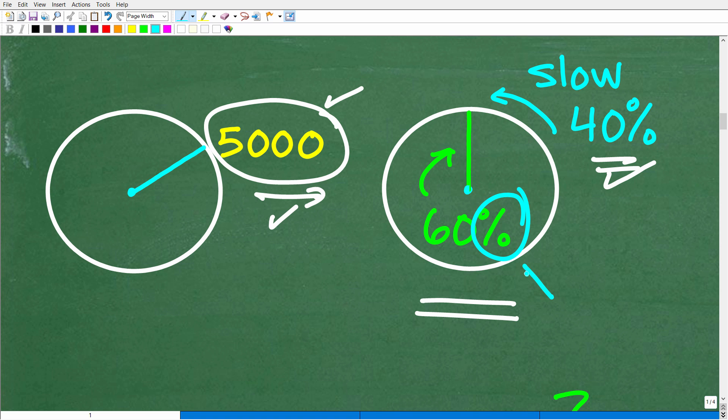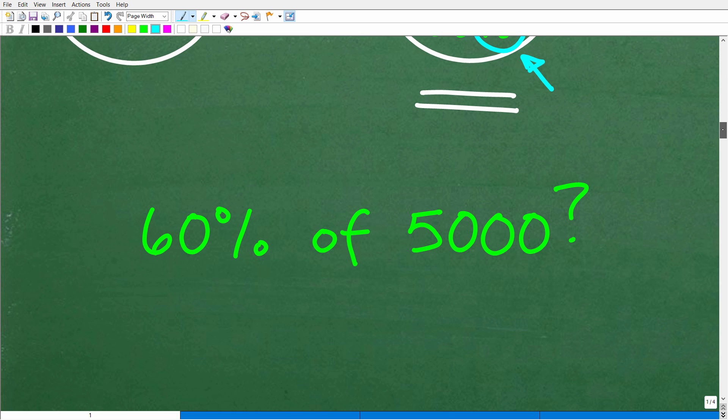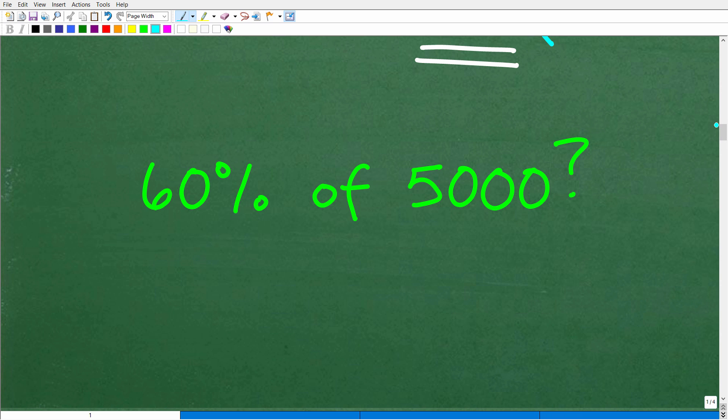You know, and, again, we are dealing with percent or percent math word problems. Okay, so, we need to figure out what 60% of 5,000 is equal to. Okay, so, this is just a basic percent question. 60% of 5,000 is equal to what?